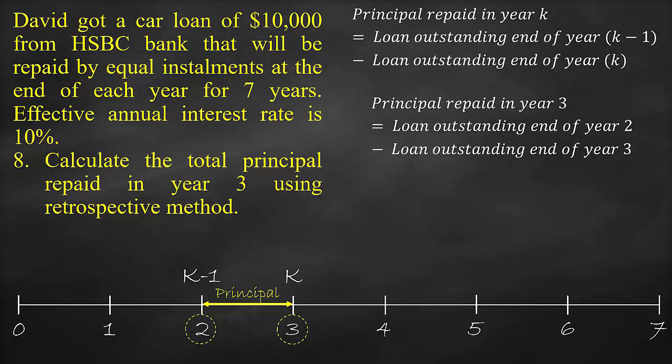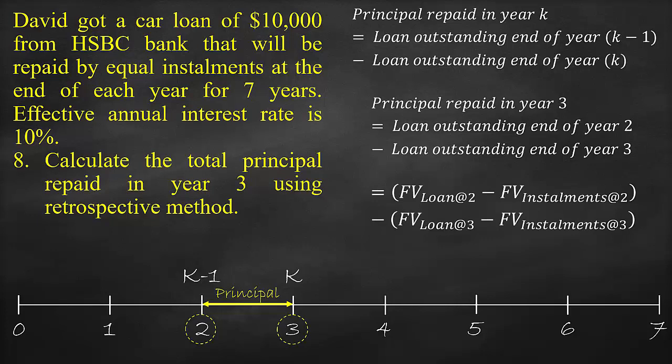Using the retrospective method formula, the principal repaid in Year 3 is equal to the loan outstanding at the end of Year 2 minus the loan outstanding at the end of Year 3. The formula of the loan outstanding at the end of Year 2 is the single cash flow future value of the loan at the end of Year 2 minus the ordinary annuity future value of installments at the end of Year 2, minus the formula of the loan outstanding at the end of Year 3, which is the single cash flow future value of the loan at the end of Year 3 minus the ordinary annuity future value of installments at the end of Year 3.